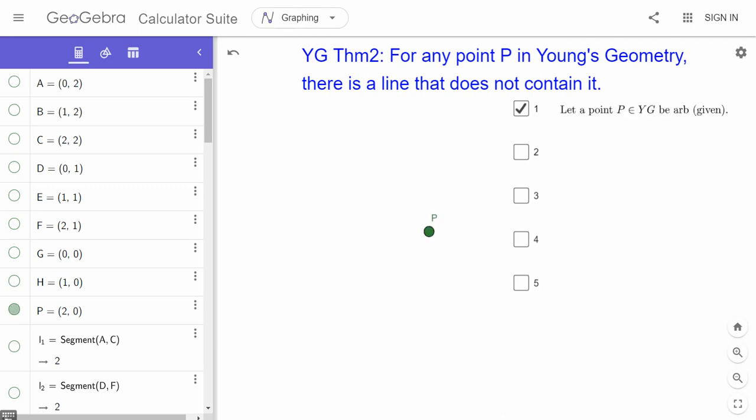Well, I need to start with an arbitrary point. It says for any point P in Young's Geometry, so the first thing I start off with is let this point be given, be arbitrary, right? And that's from the given. And why is it possible? Well, we know there are at least four points in this geometry, so we're good to go on that score.